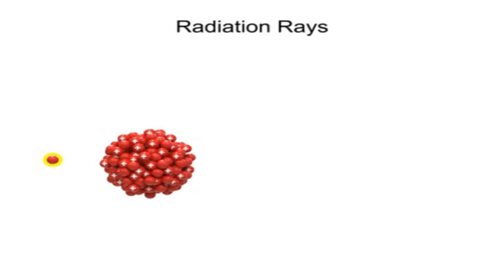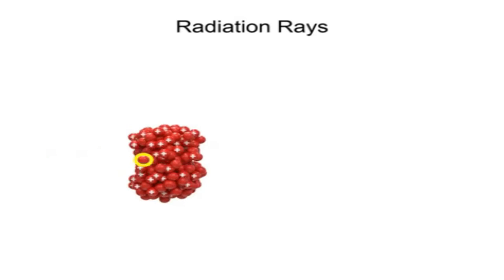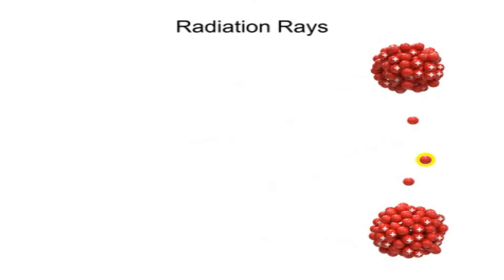When a neutron is fired at high speed into an atom of uranium, it will split the atom in a process called fission.